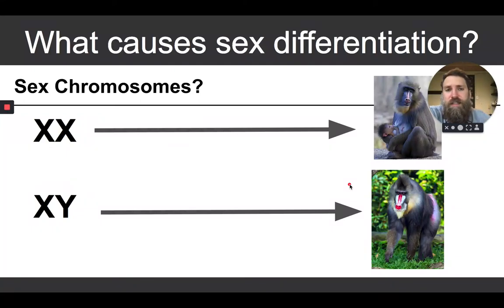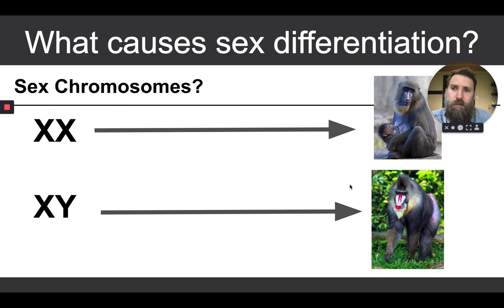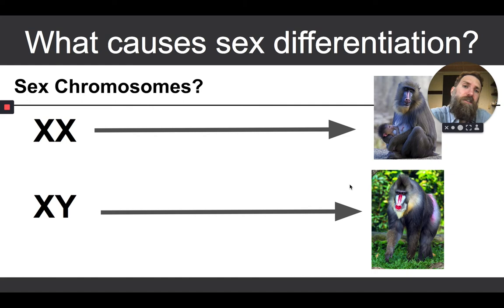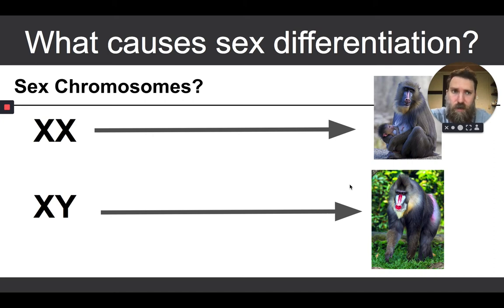Hello class. This is the last place that we left off. Last time we were in class together, we were discussing what causes sexual differentiation. Specifically, what are those proximate mechanisms — the physiology, molecular, and cellular processes — that actually lead to sexual differentiation.